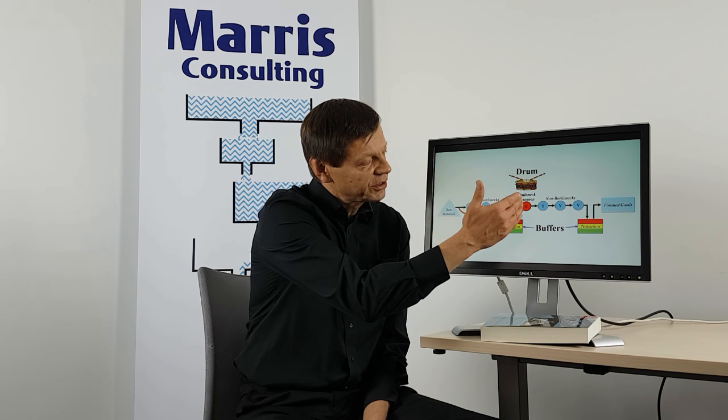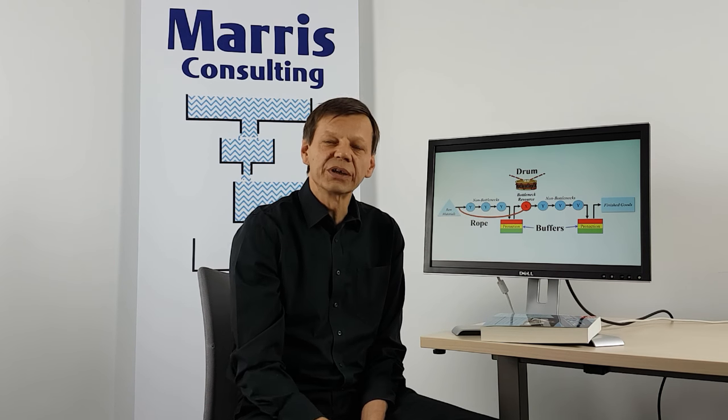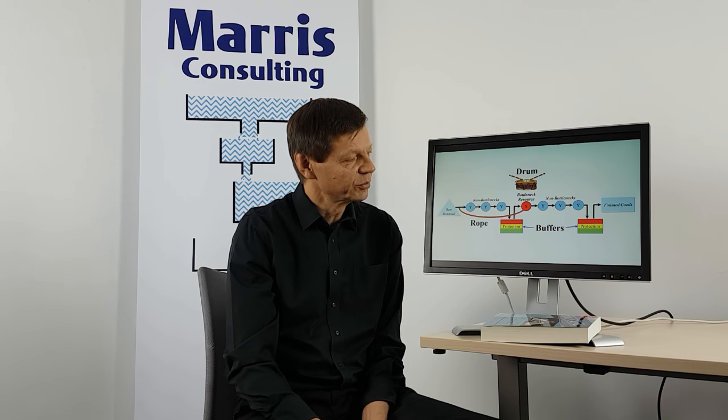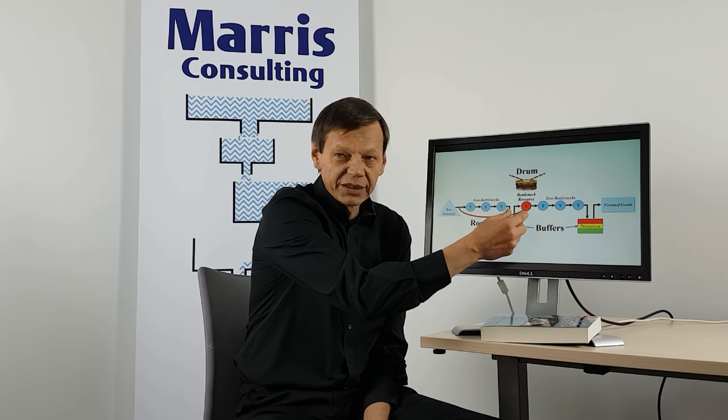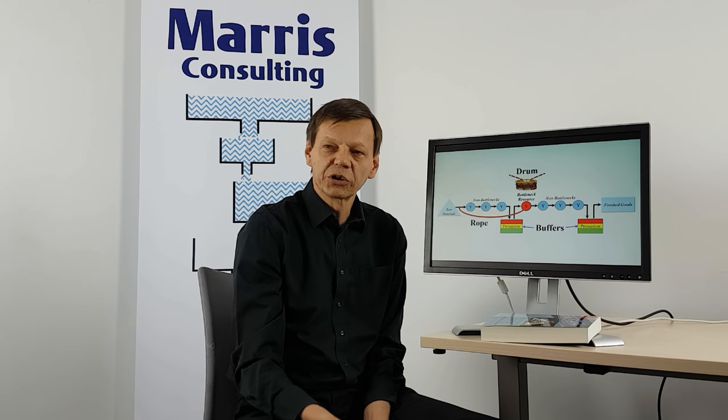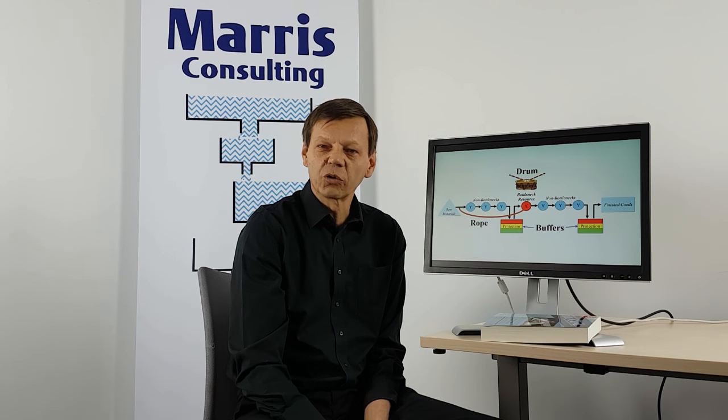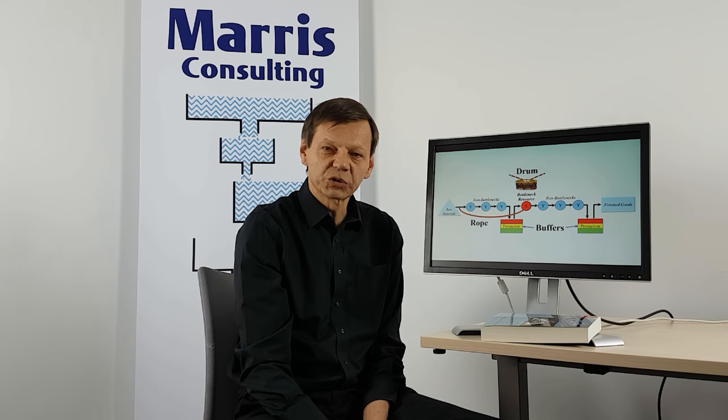The production management system is called the drum buffer rope. The first thing is that one identifies the resource that is the constraint — here in red, in the middle, for example. The first thing one does is to exploit it properly. We have what we call the drum, and that is the planning and scheduling system of the factory. What is particular about it is that you focus on just that one resource, the bottleneck, and you decide how you're going to use it best according to the order book — saying that this or that work order will be done at a particular time. That's the first step, ensuring that we're using that resource perfectly.